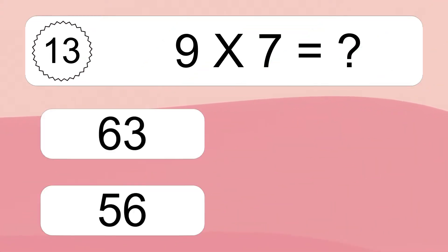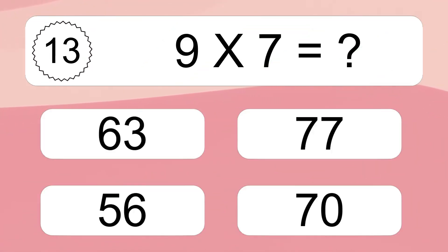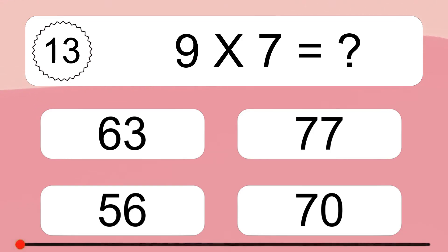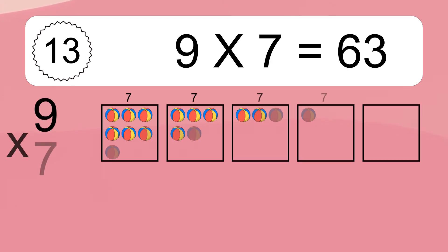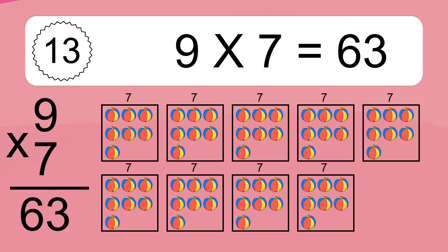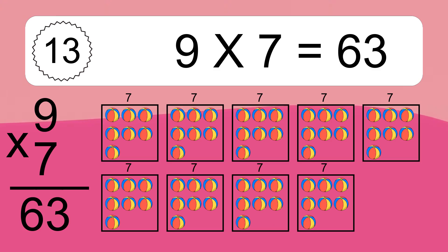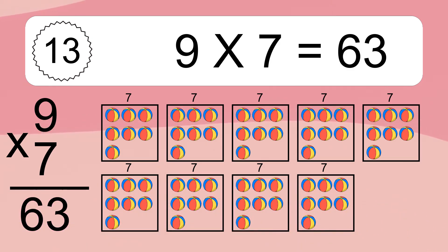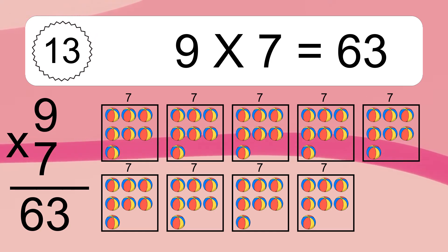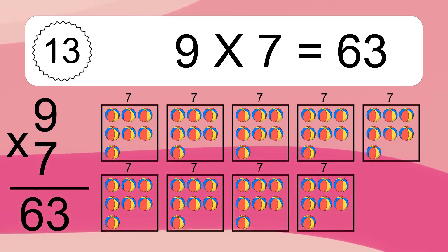9 times 7 equals what? 9 times 7 equals 63. We have 9 boxes and each box has 7 colorful balls inside. If you count all the balls in all the boxes together, you will have 9 times 7 balls. This equals 63 balls.